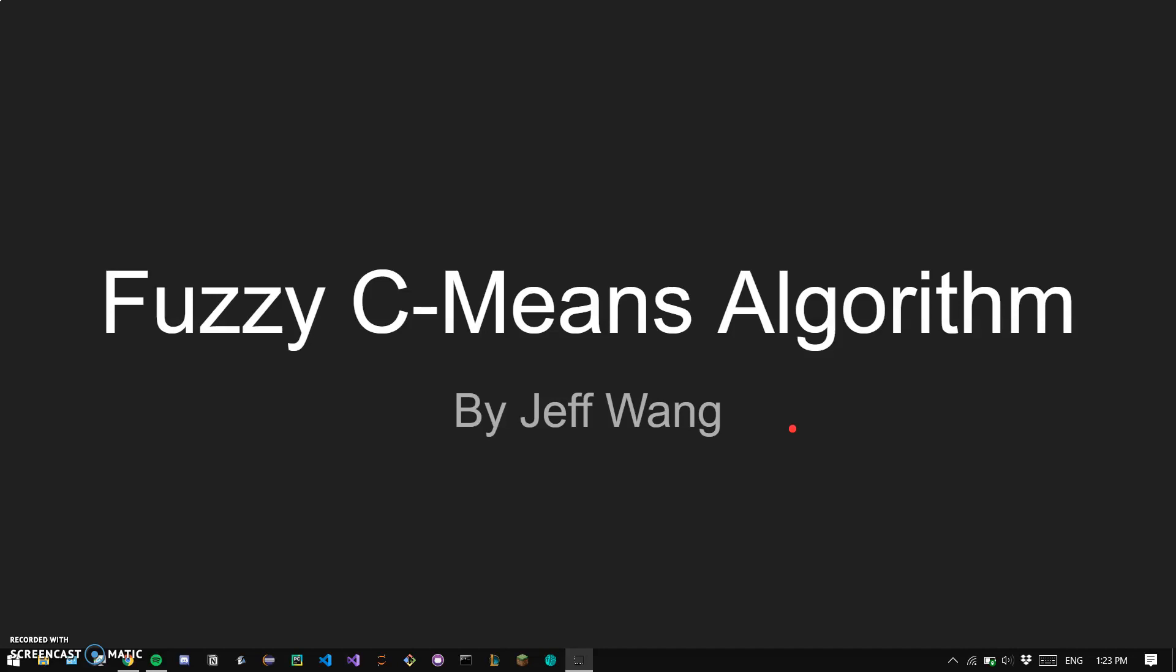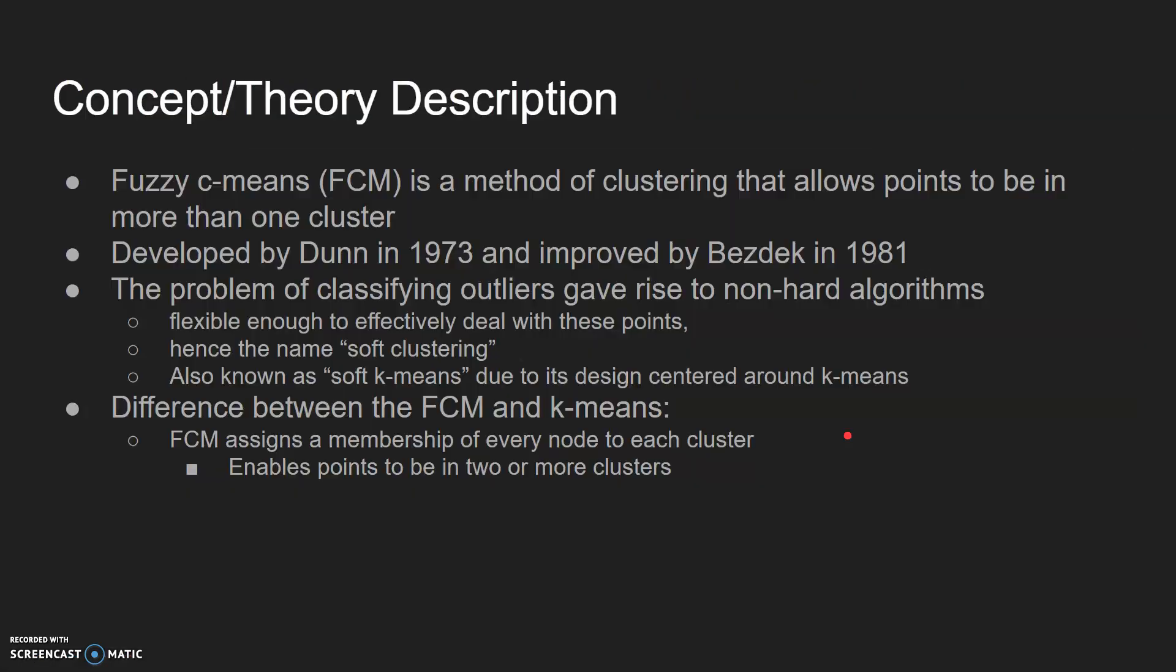My algorithm was fuzzy C-means. Here's a brief concept and theory description of it. Fuzzy C-means, FCM, is a method of clustering that allows points to be in more than one cluster. This algorithm was developed by Dunn in 1973 and improved by Bezdek in 1981.